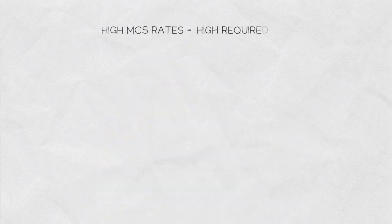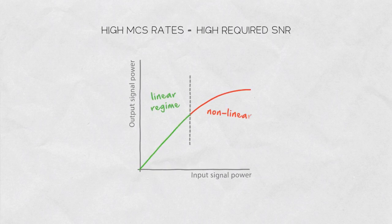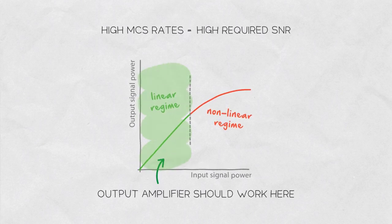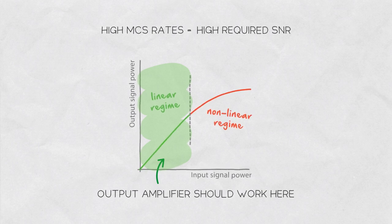Based on the growing demand on the signal SNR with growing MCS rates, we need the amplifier to work in the linear regime if we want to use high MCS rates.